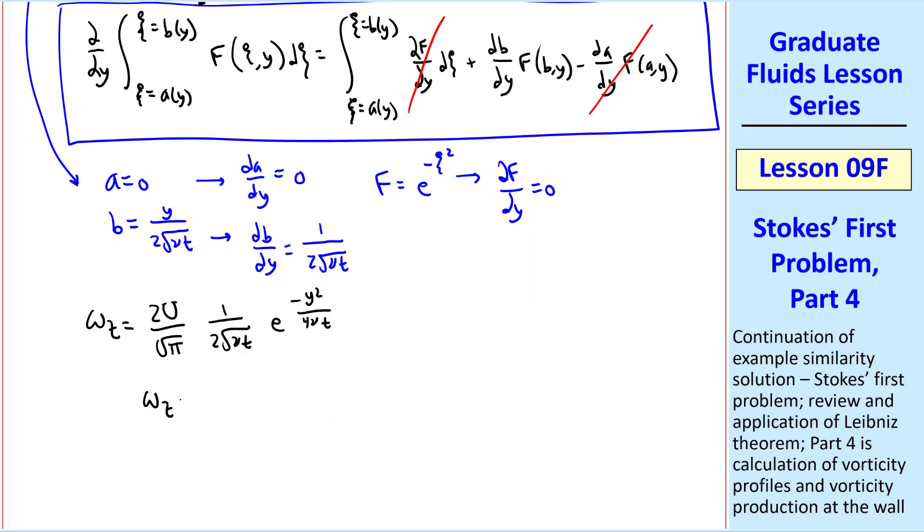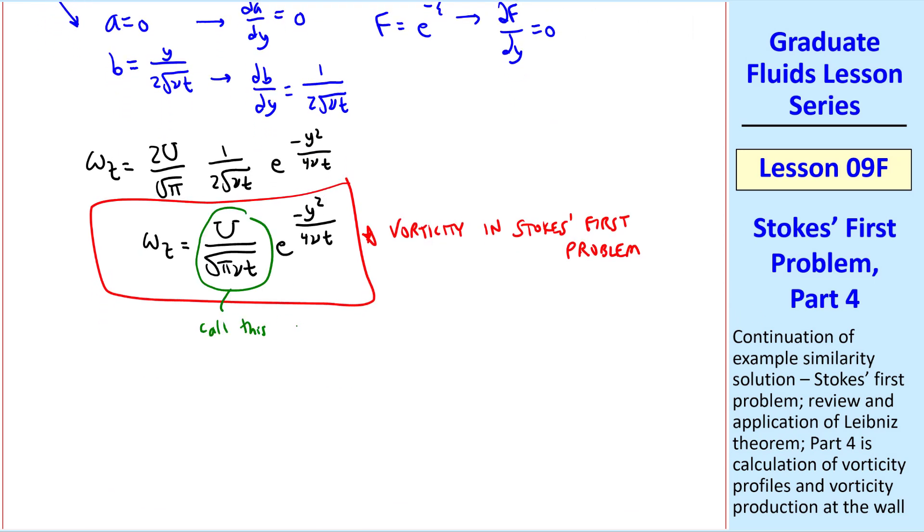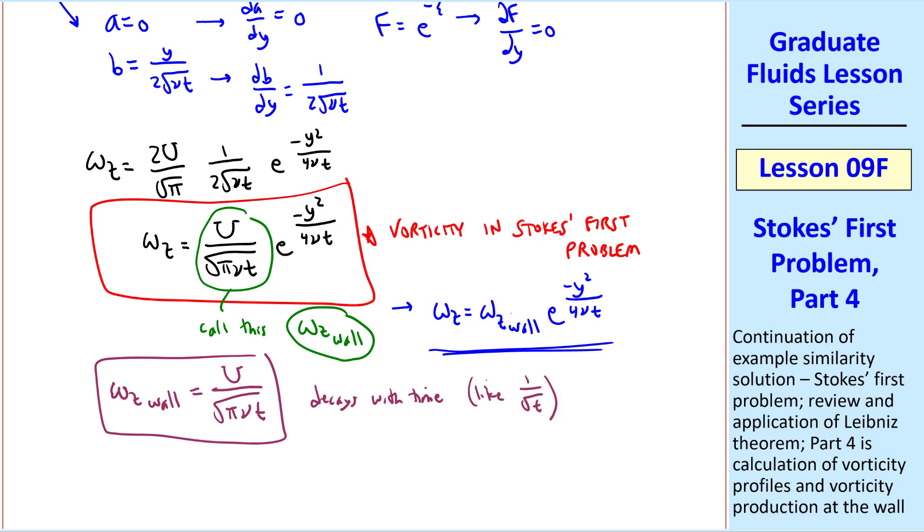Combining some of the constants, we have omega z is U over square root of pi nu t, e to the minus y squared over 4 nu t. This is our equation for vorticity in Stokes' first problem. Two quick comments. We can call this grouping of terms omega z wall, since at the wall where y equals zero, the exponential term goes away, and we're left with this. So omega z is omega z wall, e to the minus y squared over 4 nu t. But you can see that omega z wall decays with time. In fact, it behaves like 1 over square root of time.